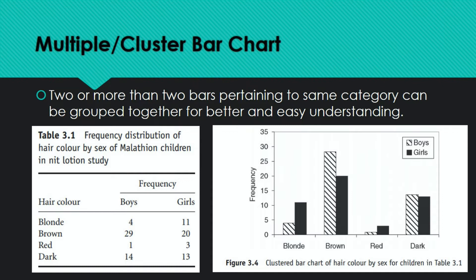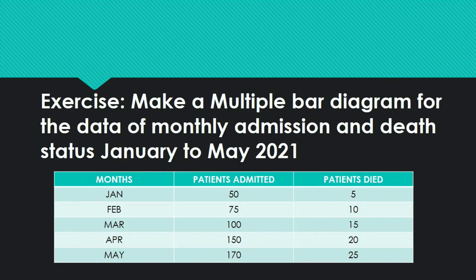When you have one category to present across multiple groups — and the data is nominal or ordinal — use the multiple bar chart. Exercise: Make a multiple bar diagram for the data of monthly admissions and deaths from January to May 2021. There are two categories — admissions and deaths — plotted against months. You should be able to decide which graph to use even when the question does not specify.